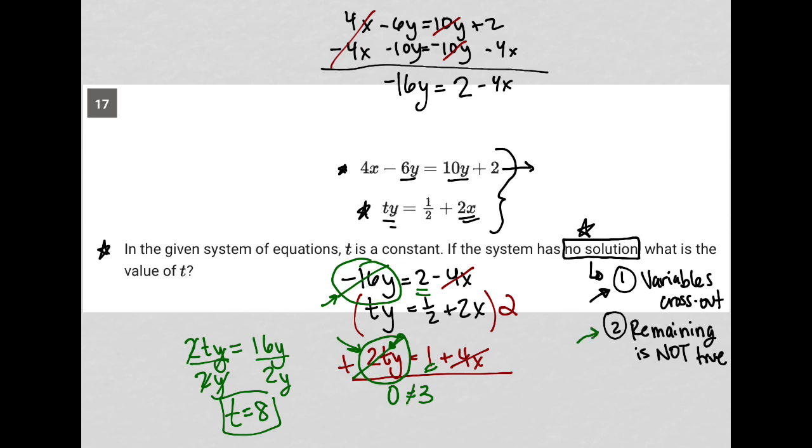So when t equals 8, the variables cross out, and the remaining is not true. Therefore, when t equals 8, that's the t value that causes the system of equations to have no solution.